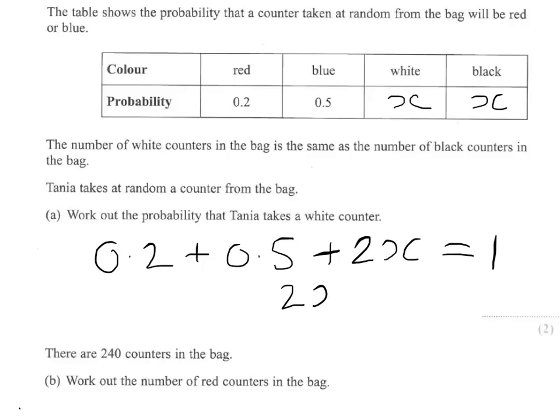We have 2X equals 0.3, and therefore X, which is the probability for both white and black, will be 0.15. So the answer to the first part is 0.15.